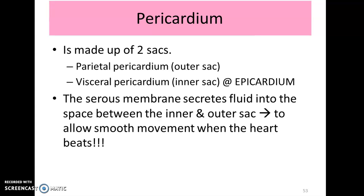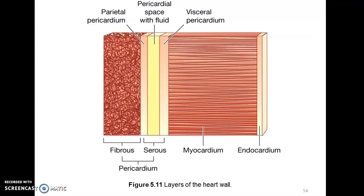In between the parietal and visceral pericardium, there is a very small gap filled with a specialized fluid known as pericardial fluid, which allows smooth movement when the heart beats. This pericardial fluid, produced by both layers of the pericardial sac, reduces friction between these tissues and the surrounding area, acting as a lubricant for the heart's movement.